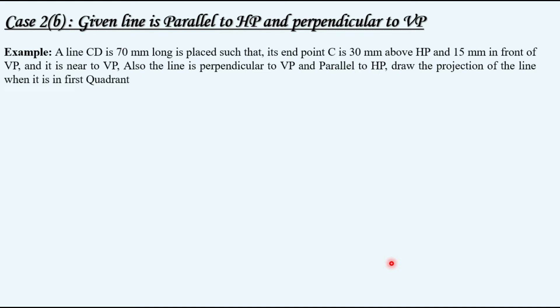Let's take an example for better understanding. A line CD is 70 mm long, placed such that its end point C is 30 mm above HP and 15 mm in front of VP, and it is near to VP. Also the line is perpendicular to VP and parallel to HP. Draw the projections of the line when it is in first quadrant.